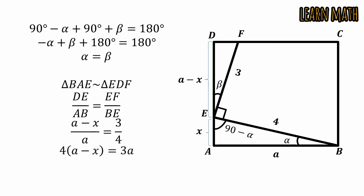4a minus 4x is equal to 3a. 4a minus 3a is equal to a, and a is equal to 4x. Now we can write x is equal to a by 4.